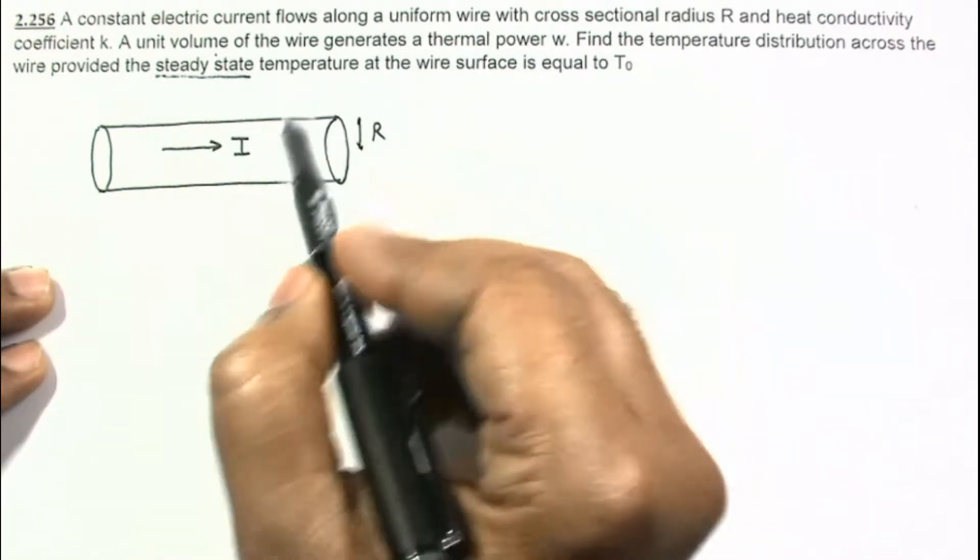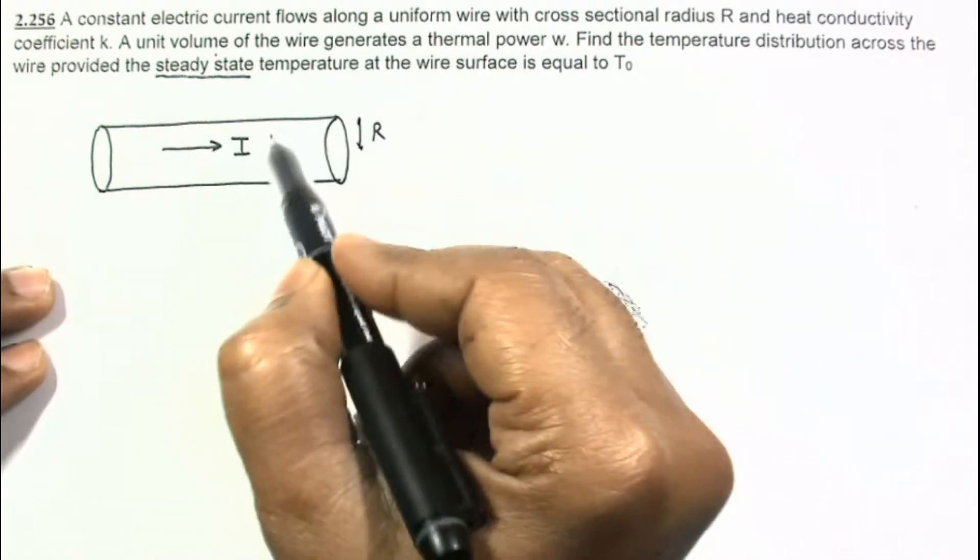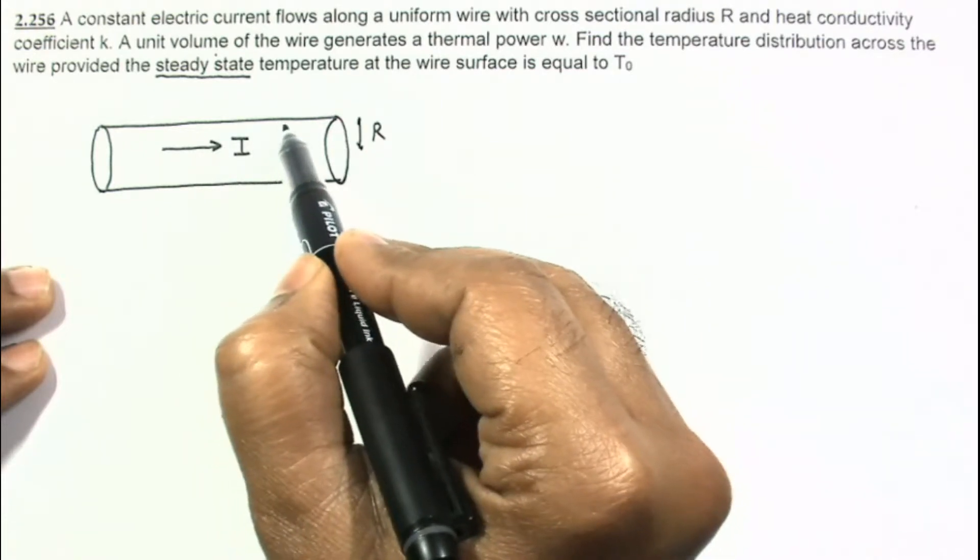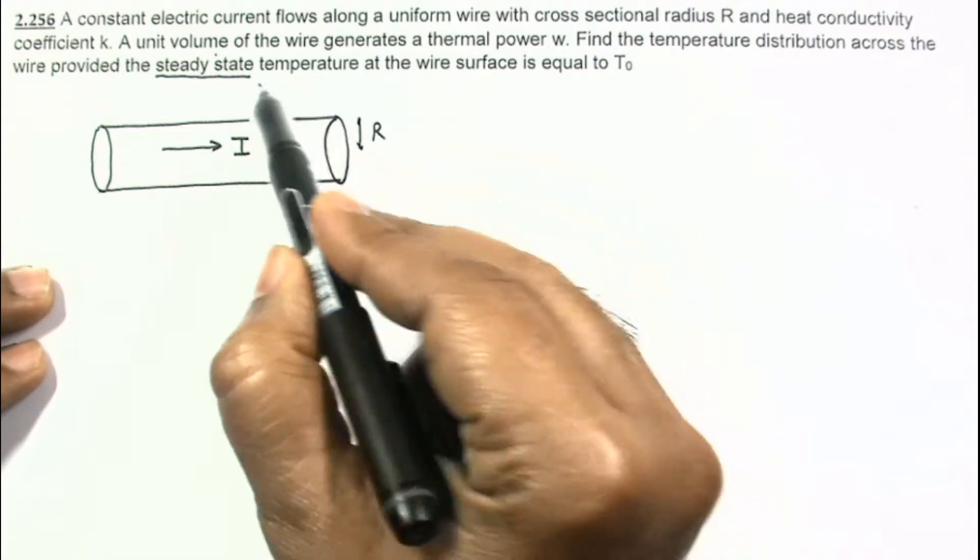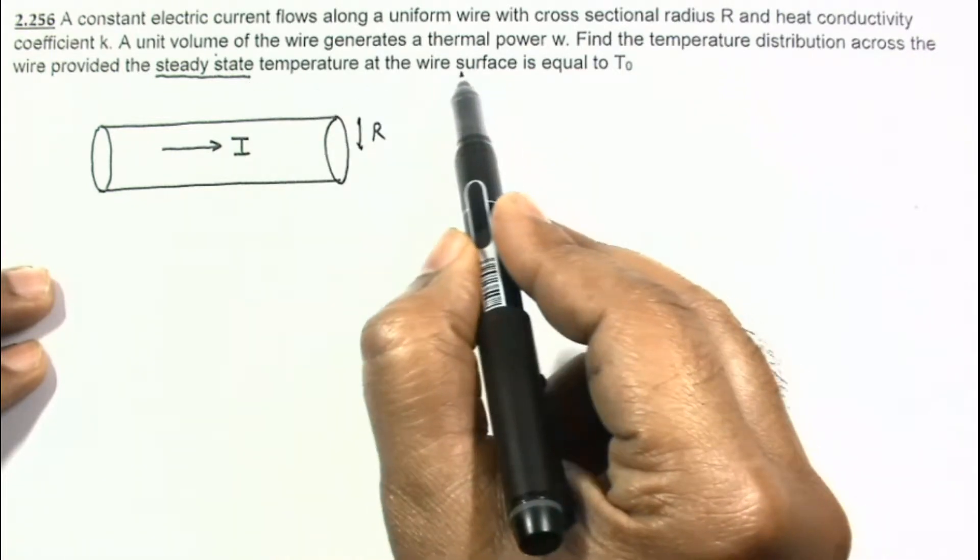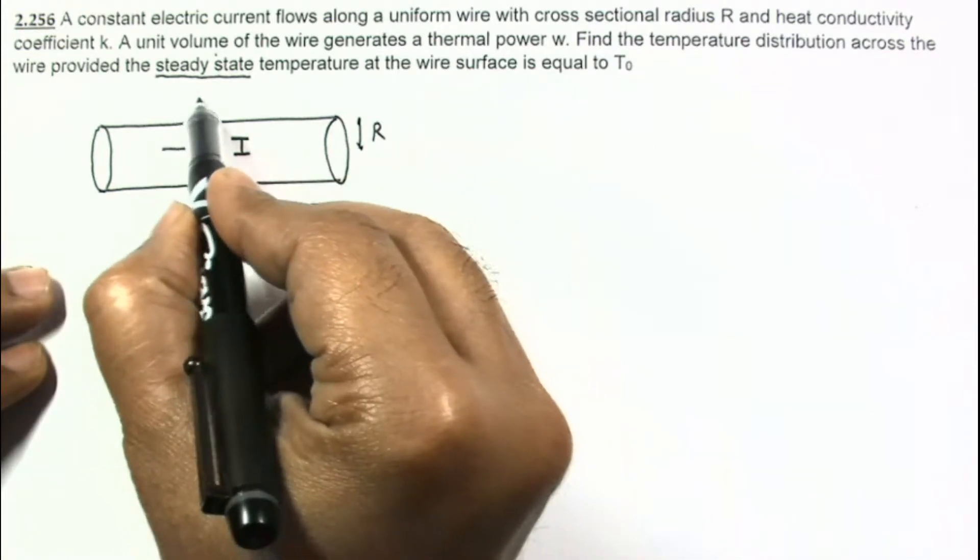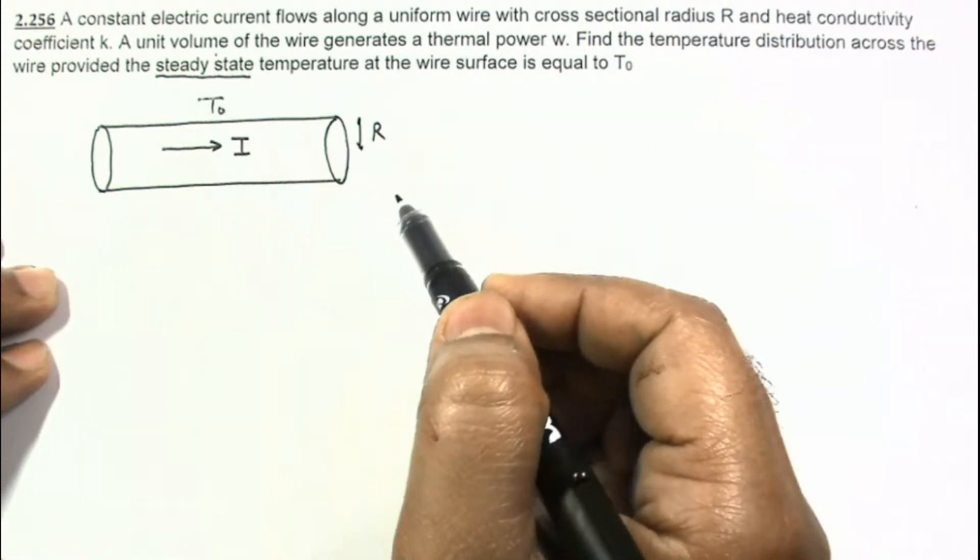Steady state means material is not absorbing any heat and temperature of different points have achieved their steady state temperature. And we are given that surface temperature is T₀. In this steady state, temperature of the surface is T₀.